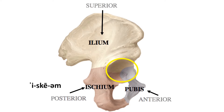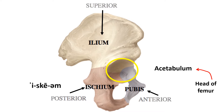The pelvic girdle connects to the axial skeleton and the lower limb. It is a ring-like bone structure — not a complete ring, as it is incomplete posteriorly. The three bones forming a hip bone are: superiorly the ilium, anteriorly the pubis, and posteriorly the ischium. These three bones form the acetabulum — the cup-shaped structure that the head of the femur sits in. The acetabulum is not formed by a single bone but by all three bones of the hip bone.